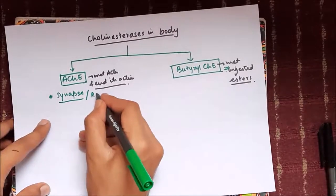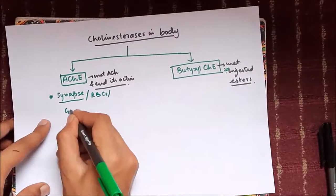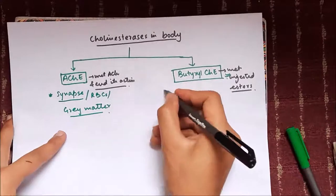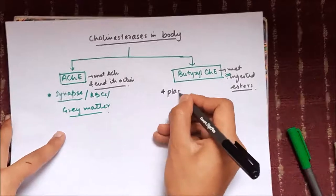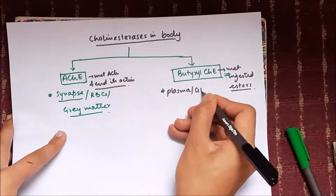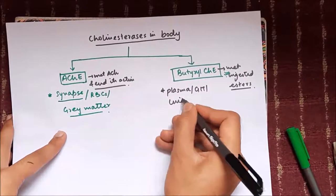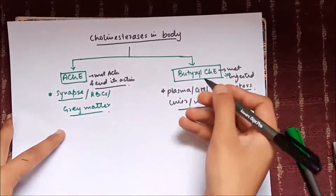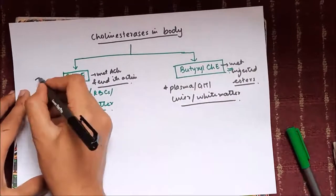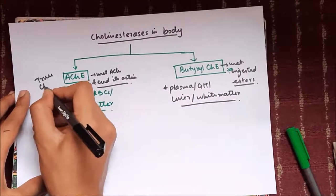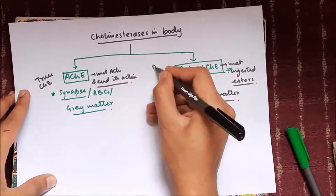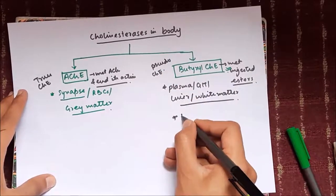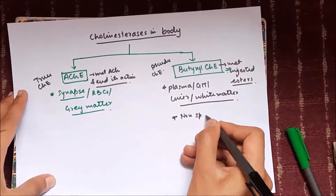Butyrylcholinesterase metabolizes ingested esters. Acetylcholinesterase is found in the synapse, in red blood cells, and in the gray matter of the brain. Butyrylcholinesterase is located in plasma, GIT, liver, and the white matter of the brain.